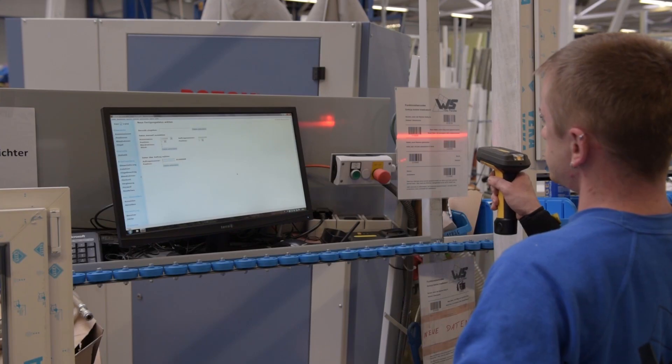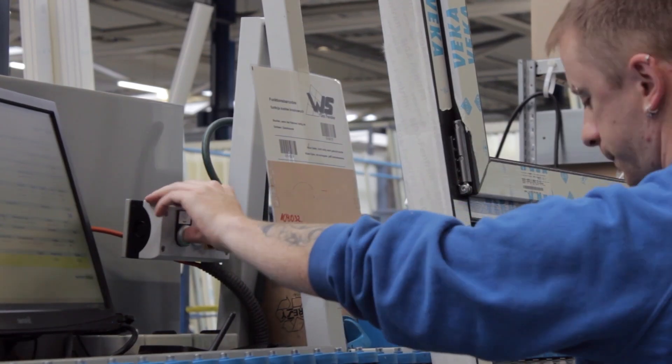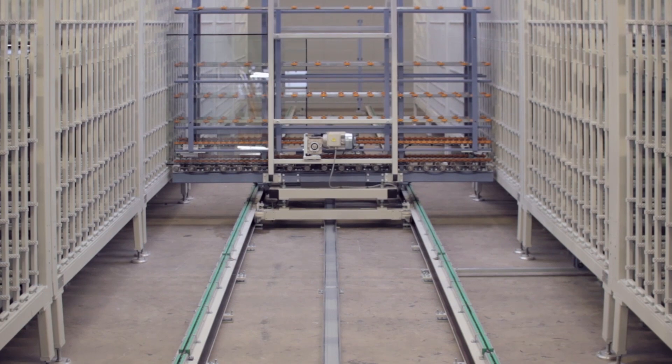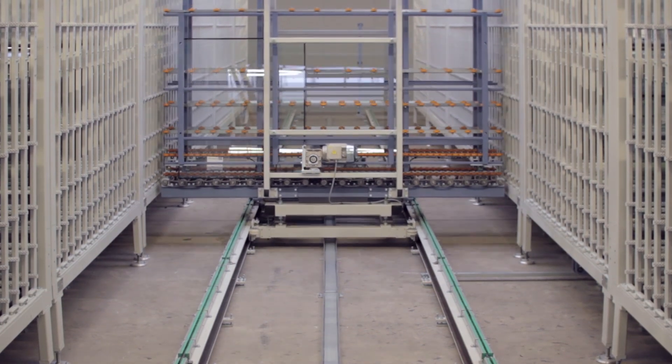If the window is factory glazed, our glass sorting system receives information that allows the glass to be prepared ready for fitting into the sash at the right time.